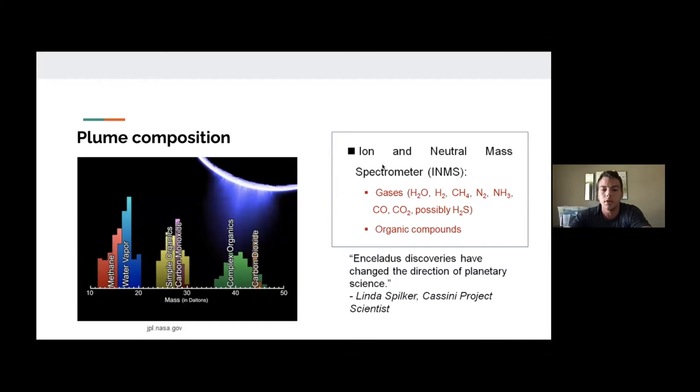The plume composition found by the mass spectrometer was found to contain water vapor, molecular hydrogen, which was an important indicator for the presence of hydrothermal activity, methane, molecular nitrogen, ammonia, carbon monoxide, carbon dioxide, and potentially hydrogen sulfide.